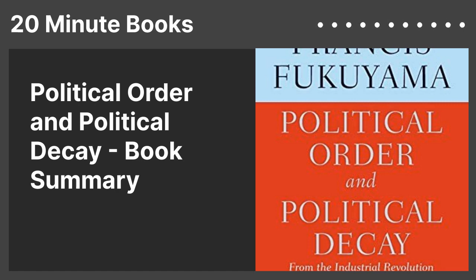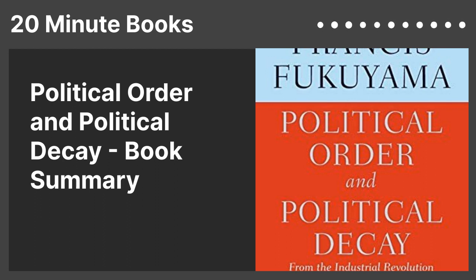Hello, Knowledge Seekers. In this episode of 20-Minute Books, we dive into the intriguing world of politics as we summarize Political Order and Political Decay, authored by the renowned political scientist Francis Fukuyama. This comprehensive piece offers a poignant contrast between America's democratic history and its present state, laying bare the inherent flaws within our modern democracy. It explores various causes of political decay in the United States, from a dwindling middle class to self-serving lobbyists and rigid institutions.